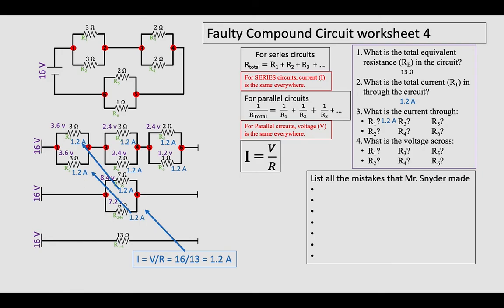Resistor one is one point two amps and three point six volts. Resistor two is one point two amps and three point six volts, one point two and two point four for resistor three, one point two and two point four for resistor four, and on down the line. Resistor two is one point three, and that's how you analyze a simple compound circuit.